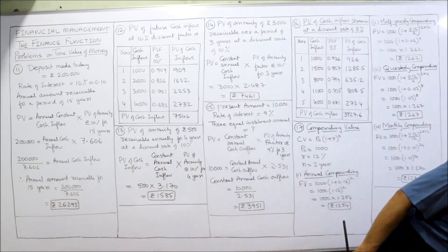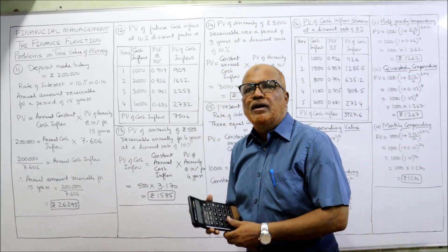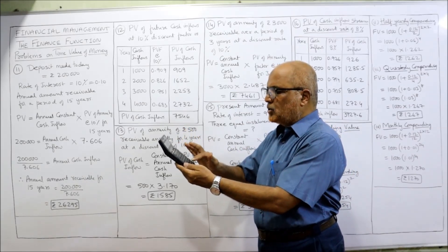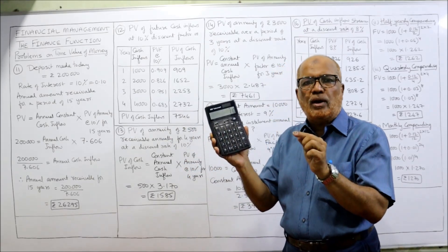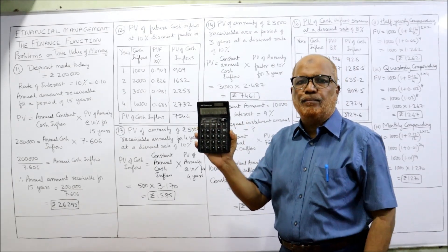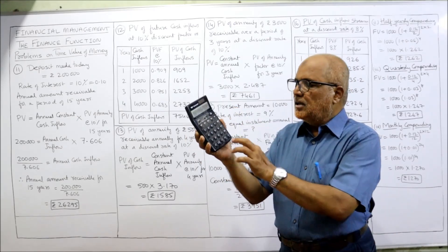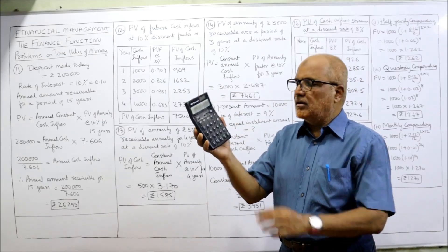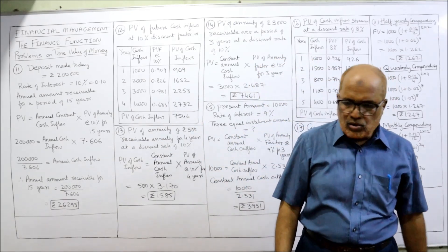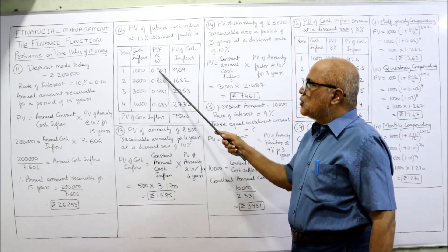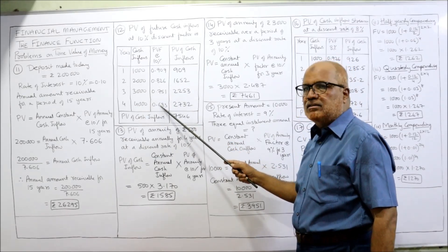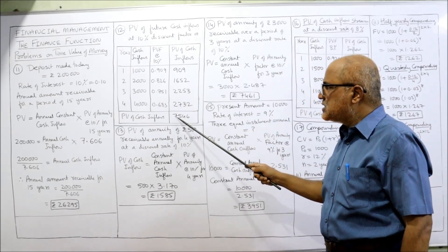You can calculate the PV factor on the calculator: 1 divided by 1.10, then keep pressing equals. First press gives 0.909 for year 1, equals again gives 0.826 for year 2, 0.751 for year 3, 0.683 for year 4. Now multiply: 1,000 × 0.909, 2,000 × 0.826, 3,000 × 0.751, 4,000 × 0.683. The total present value of cash inflows is 7,546.